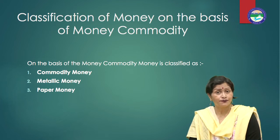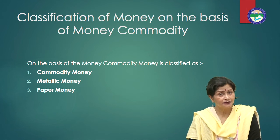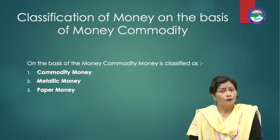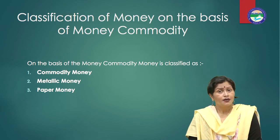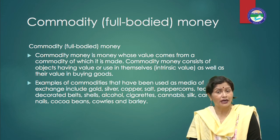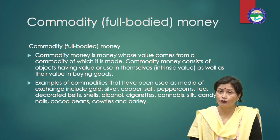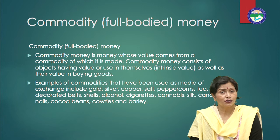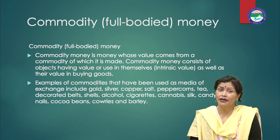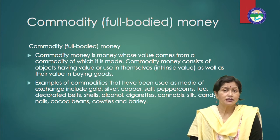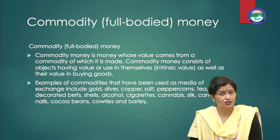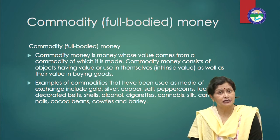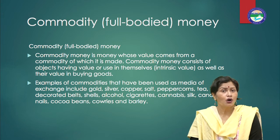On the basis of money commodity, money is classified as commodity money, metallic money, and paper money. Commodity money, or full-bodied money, is that money whose value comes from the commodity of which it is made. Commodity money consists of objects having intrinsic value as well as their value in buying goods. Examples of commodities used as media of exchange include gold, silver, copper, salt, peppercorns, tea, decorated belts, shells, alcohol, cigarettes, cannabis, silk, candy, nails, cocoa beans, cowries, and barley.